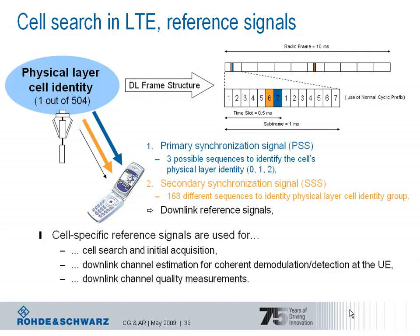The determination of the cell's identity enables the UE to examine the pseudorandom sequence used to generate the cell-specific downlink reference signals, as the initialization of the generator is based on the cell's identity and the cyclic prefix type used — normal or extended. The cell-specific reference signals fulfill three tasks: initial acquisition, coherent demodulation and detection at the UE, and channel quality measurement. The network informs the UE via system information about the power level at which the downlink reference signals are transmitted, and the UE measures that power level. The difference translates to a channel quality indicator (CQI) value, which is reported back to the network.